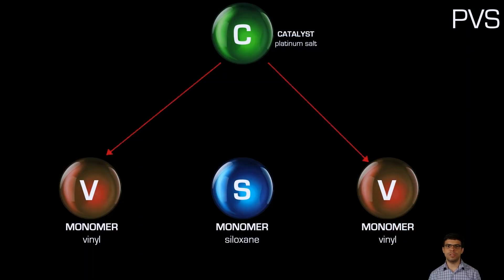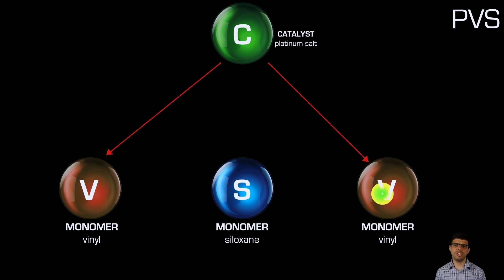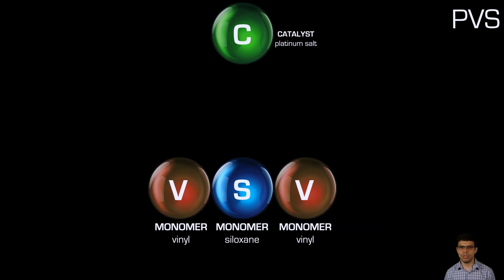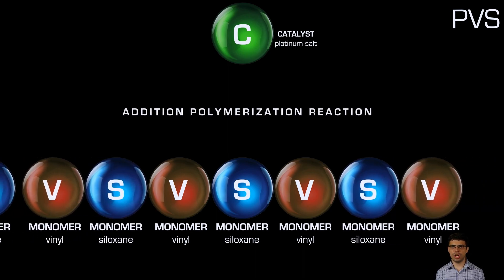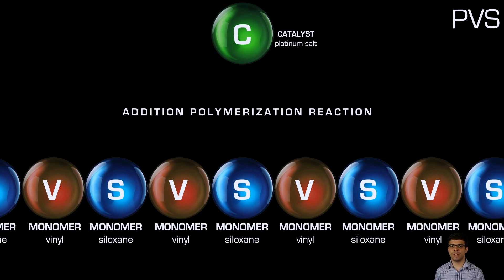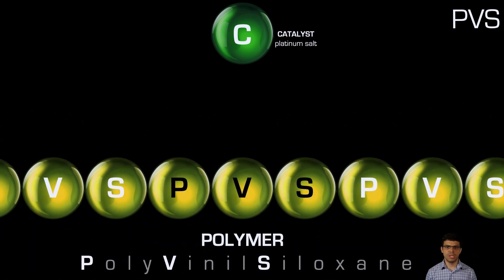In the PVS polymerization reaction, the platinum catalyst acts on monomer V, and once monomer V contacts monomer S (the siloxane), they connect together forming a polymer of monomers V and S. This is an addition polymerization reaction, which has minimal shrinkage and essentially no by-products. That way you form the polymer — polyvinyl siloxane (PVS).